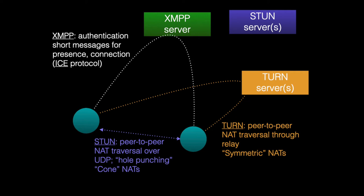STUN and TURN servers are used to create peer-to-peer links between nodes. STUN allows NAT traversal using a technique called hole punching, which works for cone NATs and enables a direct P2P connection between two nodes without going through any third party.